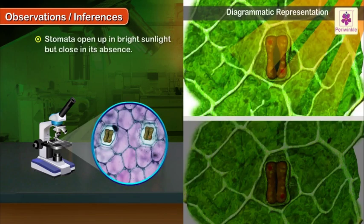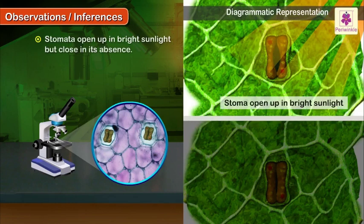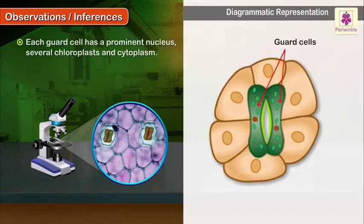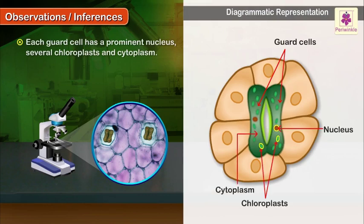Observations and Inferences: Stomata open up in bright sunlight but close in its absence. The openings become narrow under low intensity of light. Each guard cell has a prominent nucleus, several chloroplasts and cytoplasm.